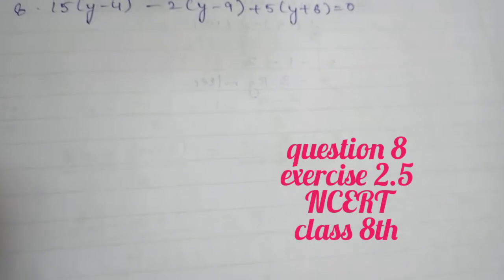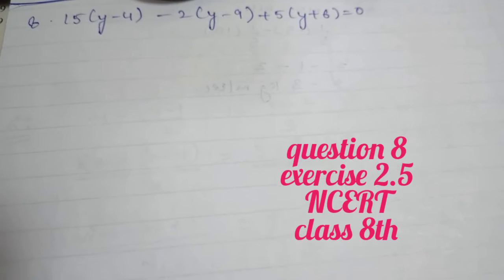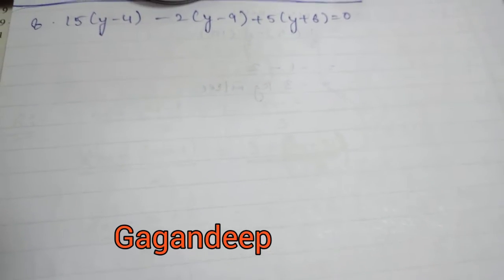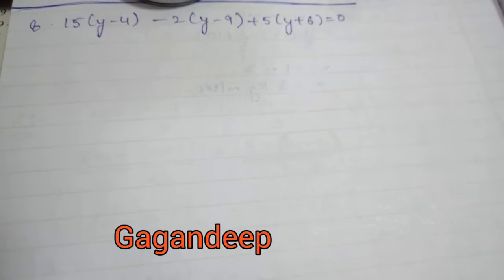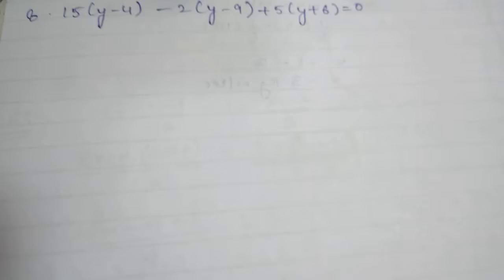Here is question number 8 of exercise 2.5. The question is: 15(y-4) - 2(y-9) + 5(y+6) = 0. So this is a direct question.